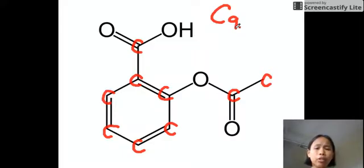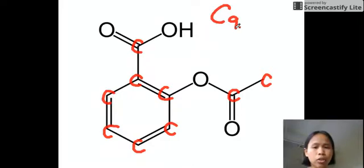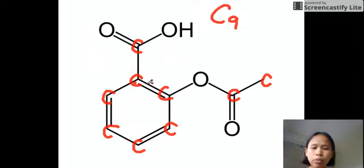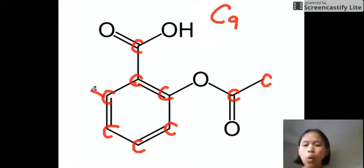Now let's count how many hydrogens we have. Go back to each carbon and find out how many bonds it needs to reach four. Starting where we began: it has one, two, three, and four — so we don't need to add hydrogen there. The next carbon also has one, two, three, four — no hydrogen needed. This carbon has one, two, three — so we need to supply one more hydrogen to make four.